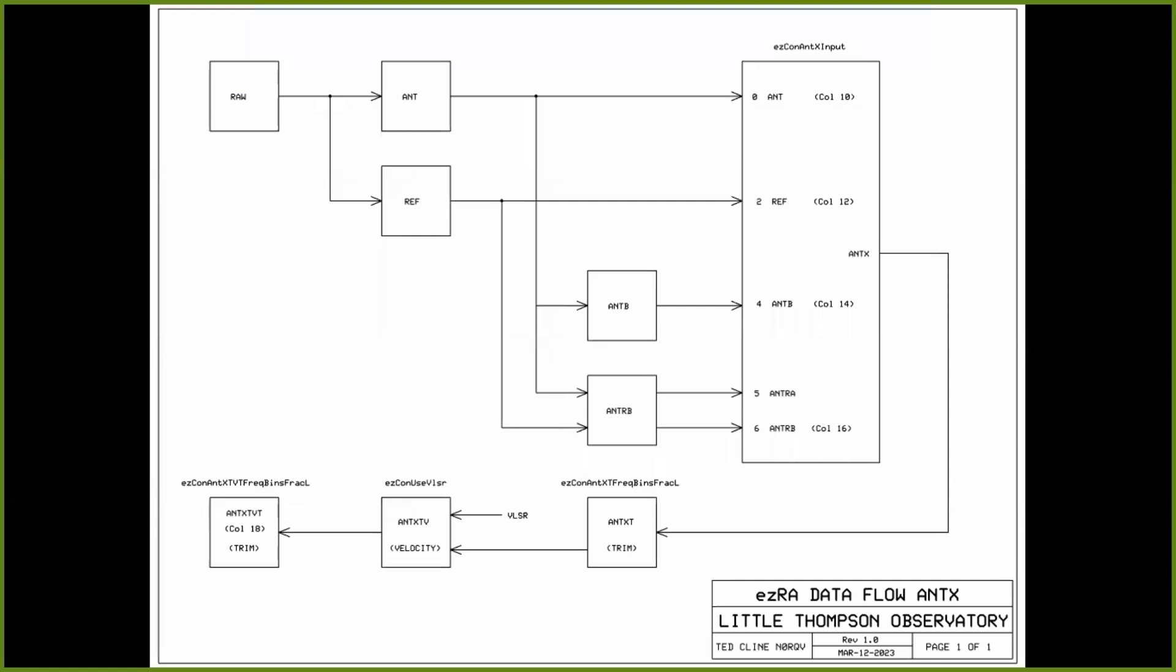When we gather data up in the corner, we see it comes in as a bunch of raw samples, and those get split into antenna samples and reference samples. The antenna samples come over here, and with some processing and math, they turn into Ant-B, having to do with baseline, Ant-B samples.